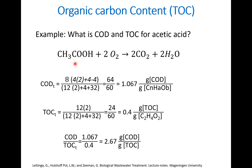Dividing 64 by the molecular weight of acetic acid (C₂H₄O₂ = 60) gives 1.067 grams of COD per gram of acetic acid. For the total organic carbon (TOC): two carbon atoms times 12, divided by 60, gives 0.4 grams of TOC per gram of acetic acid.